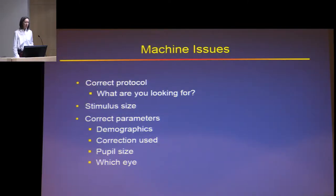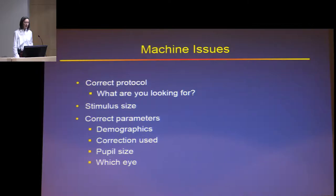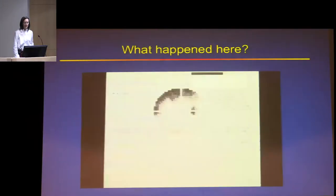Regarding machine issues: you have to choose the right protocol, know what you're looking for, choose the right stimulus size, and enter the correct parameters before the patient even gets started. You must enter the patient's age, the right correction, the pupil size, and you have to test the correct eye.